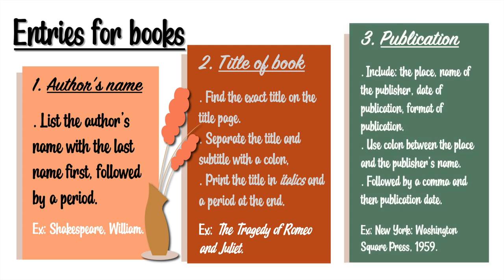Then we need the publication information. Include the place, name of publisher, date of publication, and format of publication. Use a colon between the place and the publisher's name, followed by a comma and then the publication date. Example: New York: Washington Square Press, 1959.